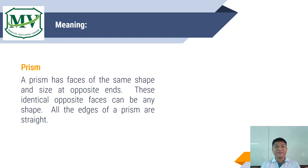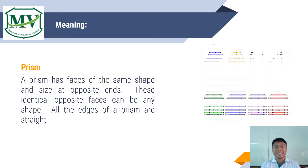A prism has faces of the same shape and size at opposite ends. These identical opposite faces can be of any shape, and all the edges of a prism are straight.